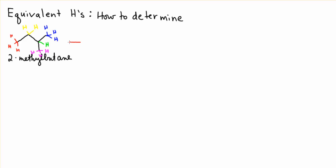So what I mean by that is, let's take one of the red hydrogens and replace it with a chlorine. So we've taken one of those hydrogens off, we've replaced it with a chlorine as you would do in free radical halogenation.